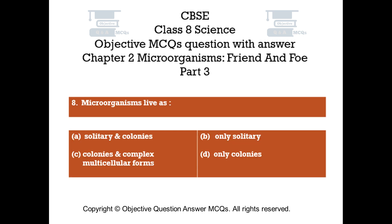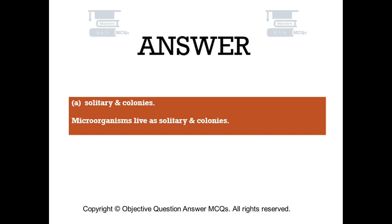Question number 8. Microorganisms live as. Option A: Solitary and colonies. Option B: Only solitary. Option C: Colonies and complex multicellular forms. Option D: Only colonies. The right answer is option A — Solitary and colonies. Microorganisms live as solitary and colonies.